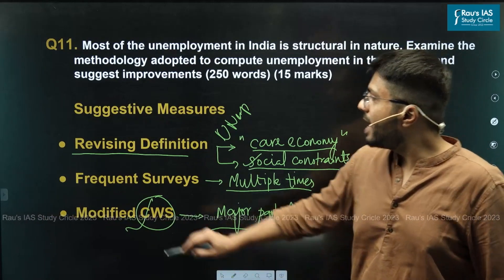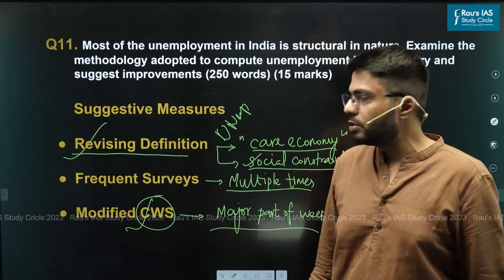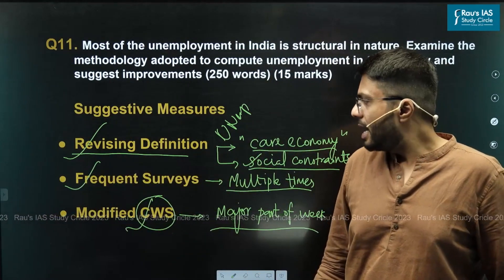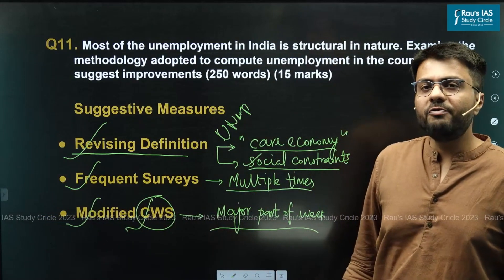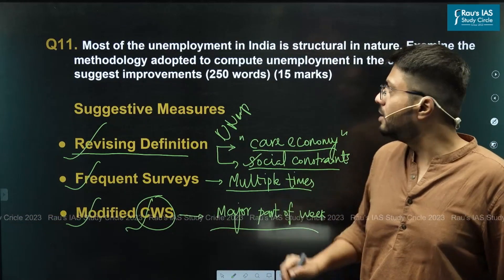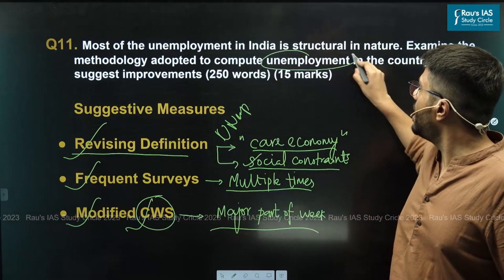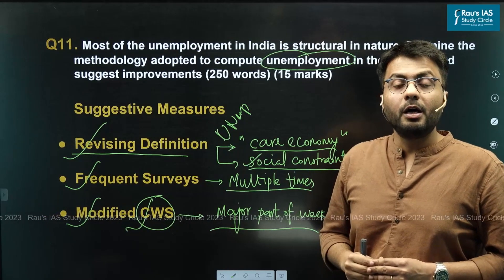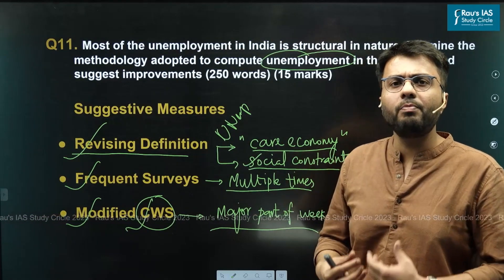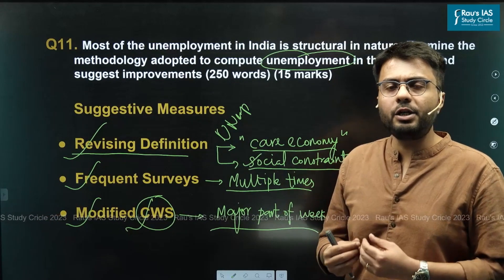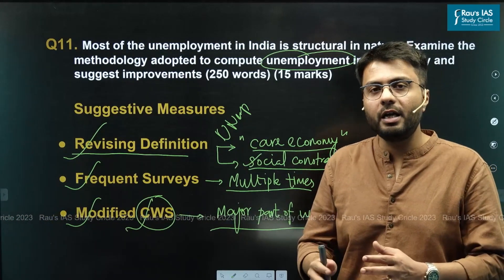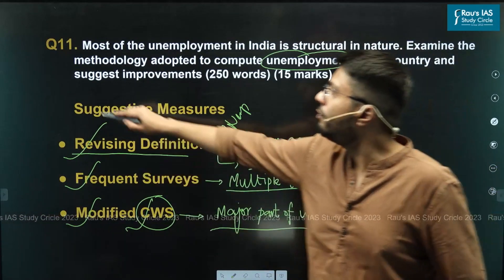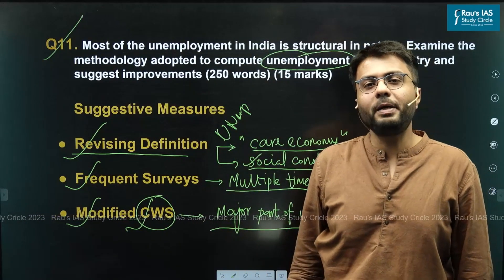By revising the definition of what constitutes a labour force, making surveys more frequent throughout the year, and modifying the Current Weekly Status methodology, we will be able to correctly estimate the number of unemployed people in the Indian economy. Only after correctly estimating unemployment can we make policies that favour job creation and lead to inclusive growth and development of the Indian economy. This concludes today's discussion of question 11 in GS paper 3 of this year's MAINS examination.